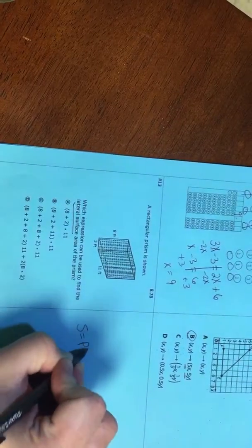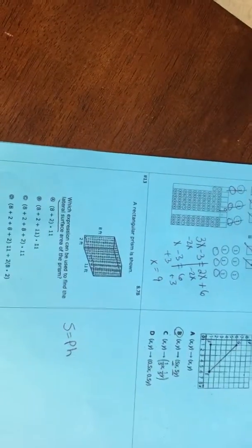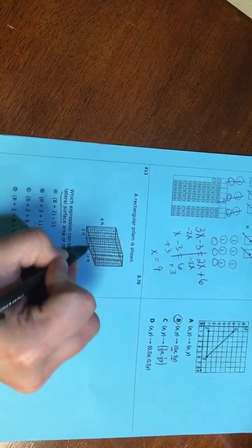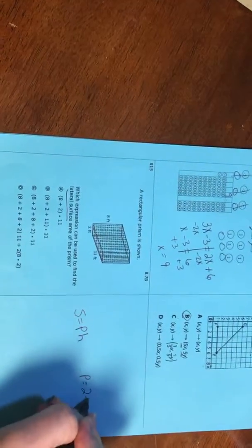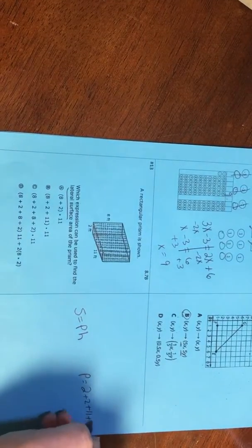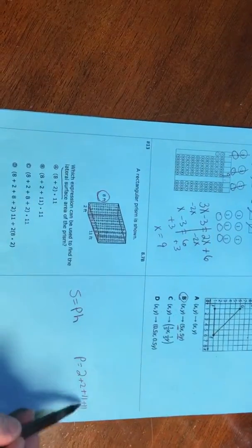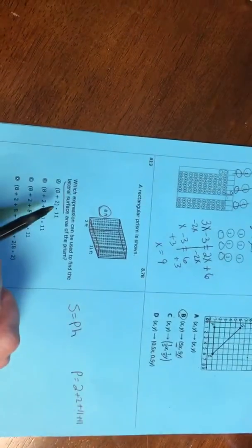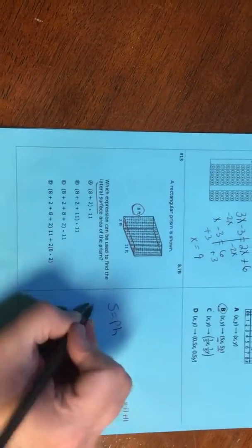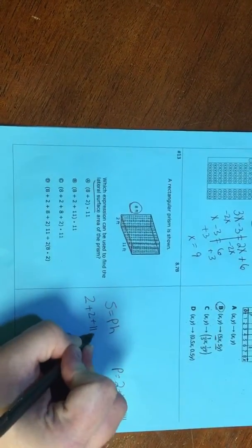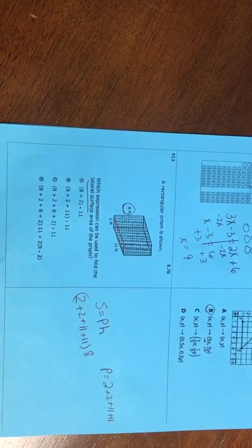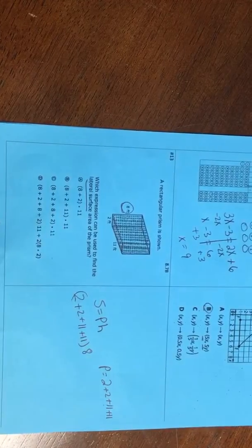So this is perimeter of the base times the height. So the base, we're going to say, is this. Okay, so that perimeter is going to be 2 plus 2 plus 11 plus 11. The height of the prism is 8. So this would be, well actually, they're not solving it, they're just matching it up. So this would be 2 plus 2 plus 11 plus 11 times 8, which doesn't match anything.